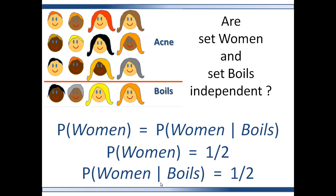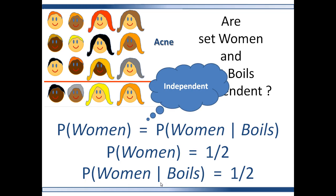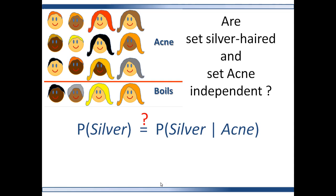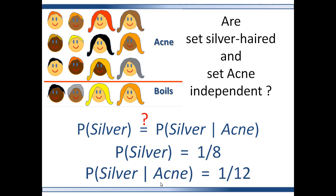So these two probabilities are equal, which means the sets women and Boyle's are independent. Are the sets silver-haired and acne independent? The probability of set silver-haired is one-eighth since there are two silver-haired people out of sixteen. The probability of silver-haired given acne is one-twelfth. So the probabilities are not equivalent and these two sets are not independent.